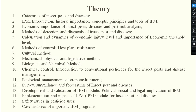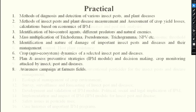We will then discuss development and validation of IPM modules, and the political, social, and legal implications of IPM. The 14th outline covers implementation and impact of IPM modules for insect pests and diseases. The 15th covers safety issues in pesticide use — precautions and antidotes. Finally, the 16th outline covers case histories of important IPM programs. This completes the theory portion.